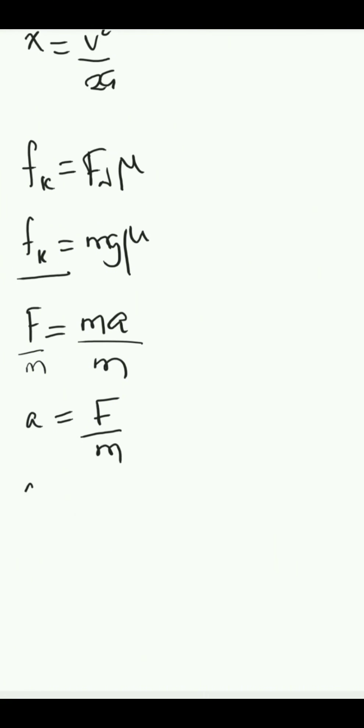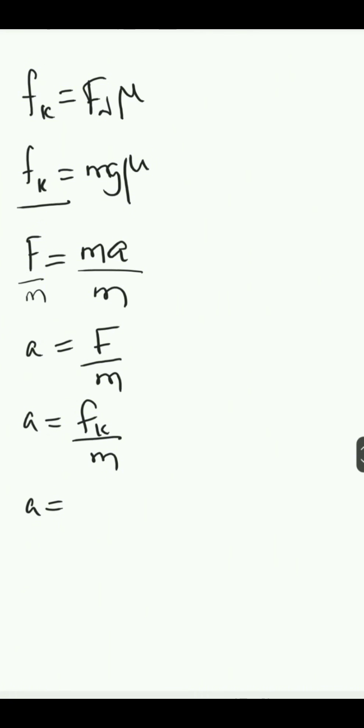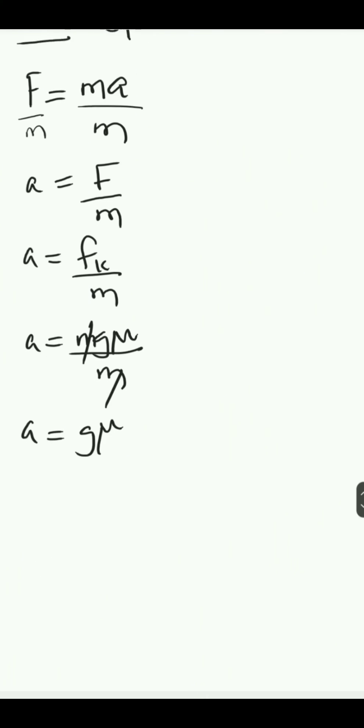Giving us our acceleration to be equal to the force over m. Now, the net force that we have is only the friction force in this case. So a is equal to the friction force divided by m, which is the normal force mg times mu over m. m and m cancel, meaning that our acceleration is equal to g times coefficient of kinetic friction.